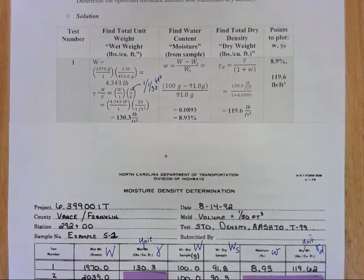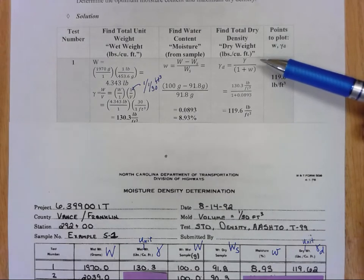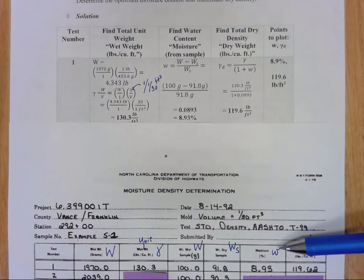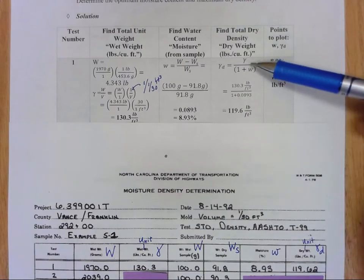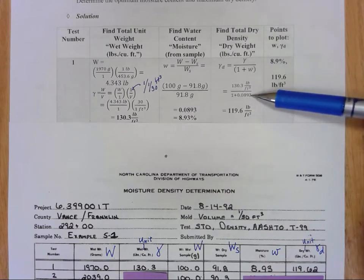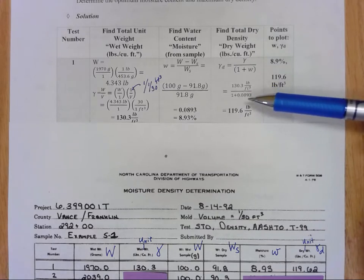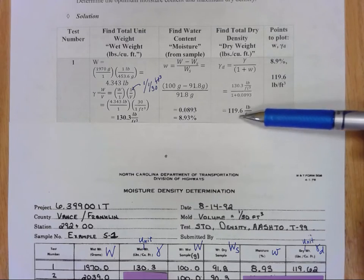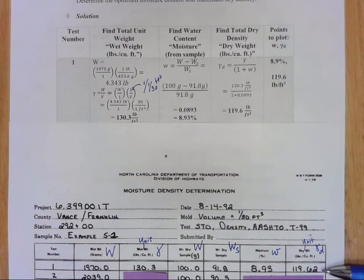So we'll reveal this first column here and then to find that total dry density now I'm going to have to use that information I got here with my total gamma and with my moisture content. So I take my gamma, 130.3 pounds per cubic feet, and I divide it by one plus that water content, that moisture content. Make sure you keep that in its decimal form so it's 0.0893—don't use the 8.93—and doing that I get 119.6.